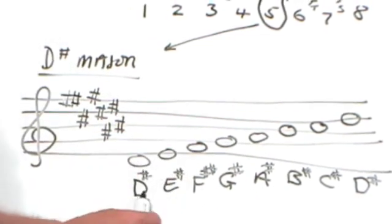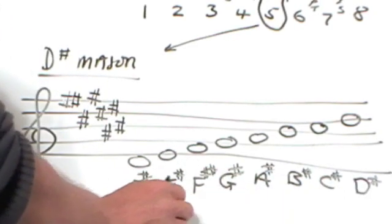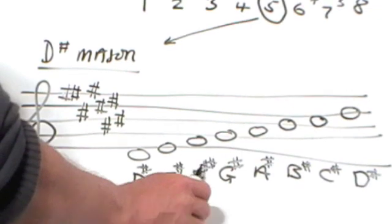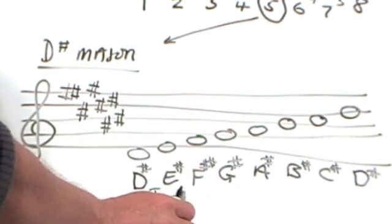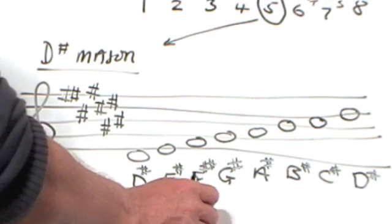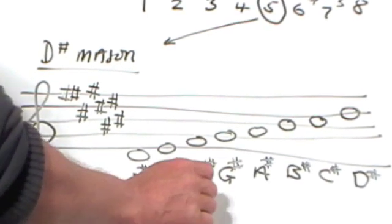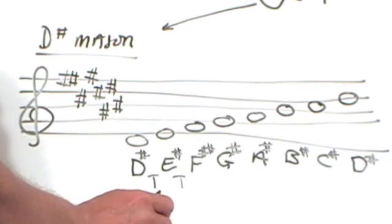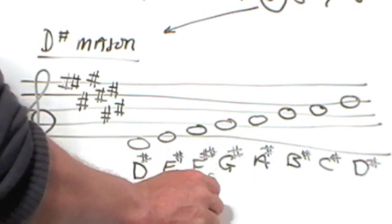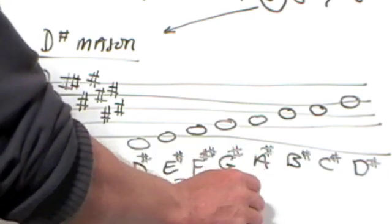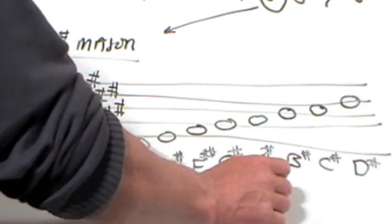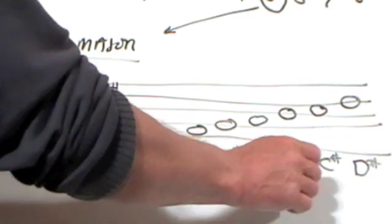And now again, we'll check the intervals between each note. So between D sharp and E sharp, we've got a tone. Between E sharp and F double sharp, bit of a brain strain this one. Remember E sharp sounds the same as F. So F to F double sharp will again be a tone. Each sharp is worth a semitone. F double sharp sounds the same as G. So from G to G sharp is just a semitone. G sharp to A sharp tone. A sharp to B sharp. Another slightly awkward one there. A to A sharp. A sharp to B. It's a semitone. B to B sharp is a tone.